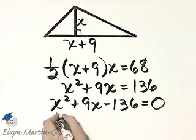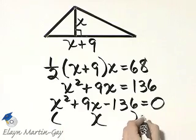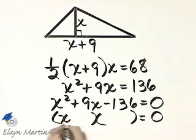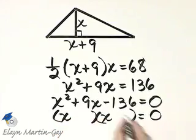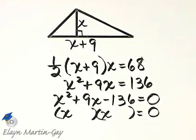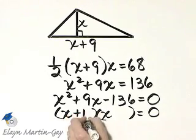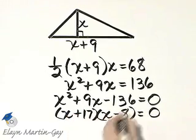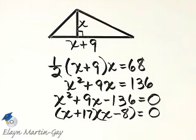Let's now factor. I've got x and x. 136, believe it or not, 136 is 17 times 8, so for negative 136 I'll have plus 17 minus 8 so that I'll have that middle term of 9x.